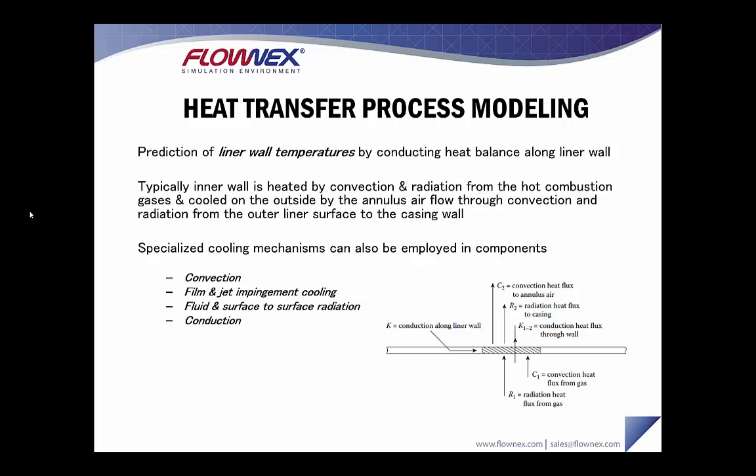Heat transfer process modeling is what allows us to predict liner wall temperatures, and we essentially do this by conducting a heat balance along the liner wall. Typically the wall is heated by convection and radiation from the hot combustion gases, and then cooled on the outside by annulus air flow through convection and radiation from the outer liner to the casing wall. Depending on the liner configuration, several specialized cooling mechanisms may also need to be employed, such as film and jet impingement cooling, fluid and surface-to-surface radiation, conduction, and convection.